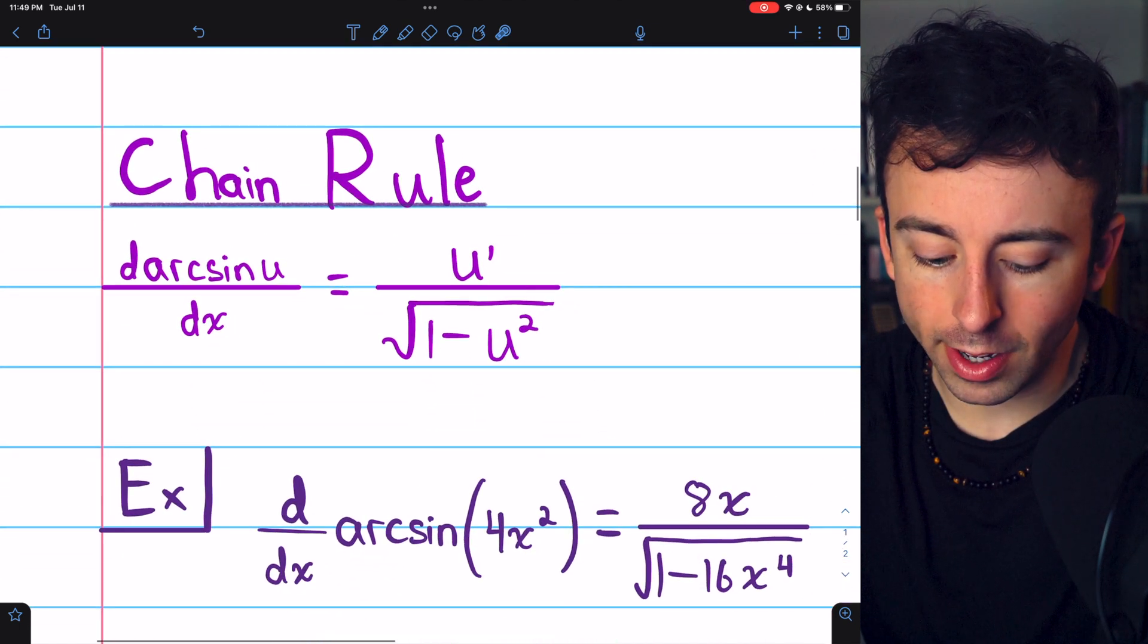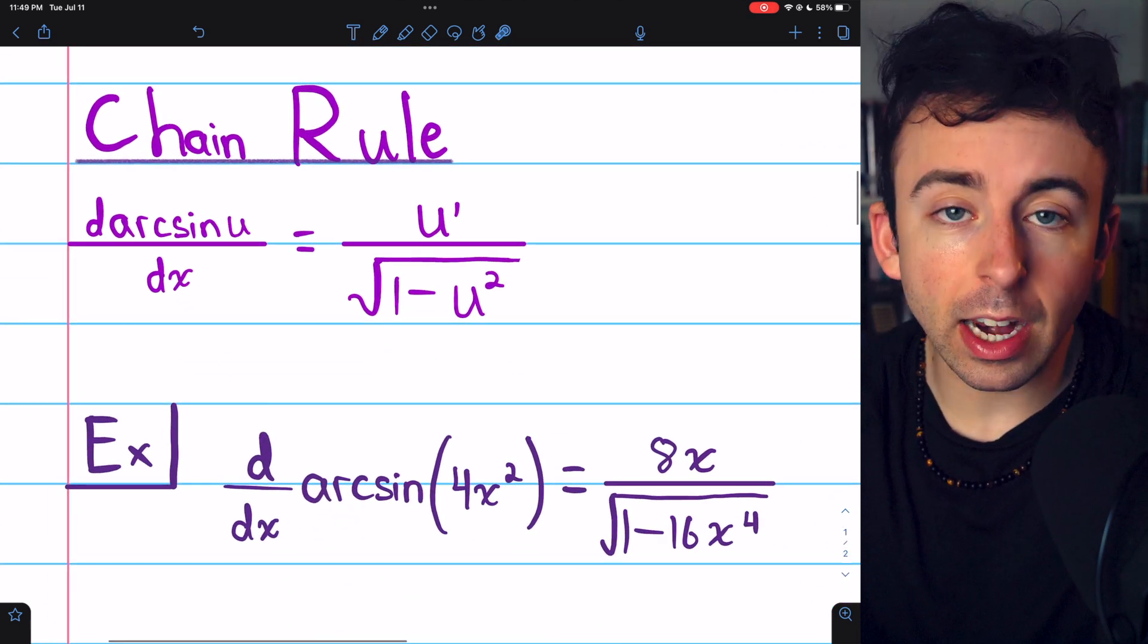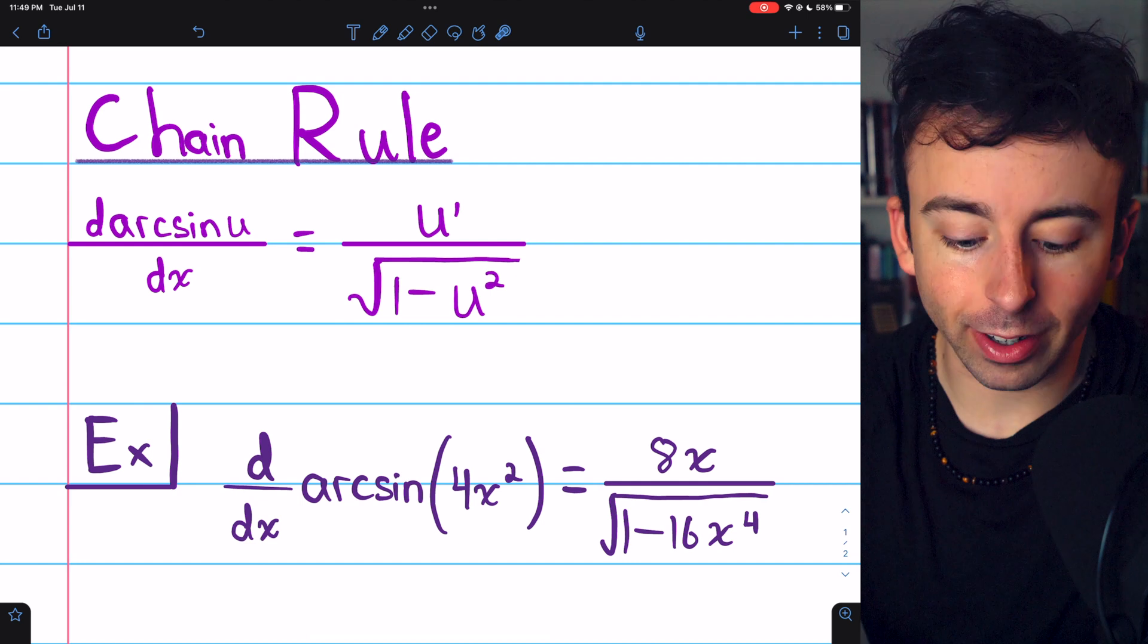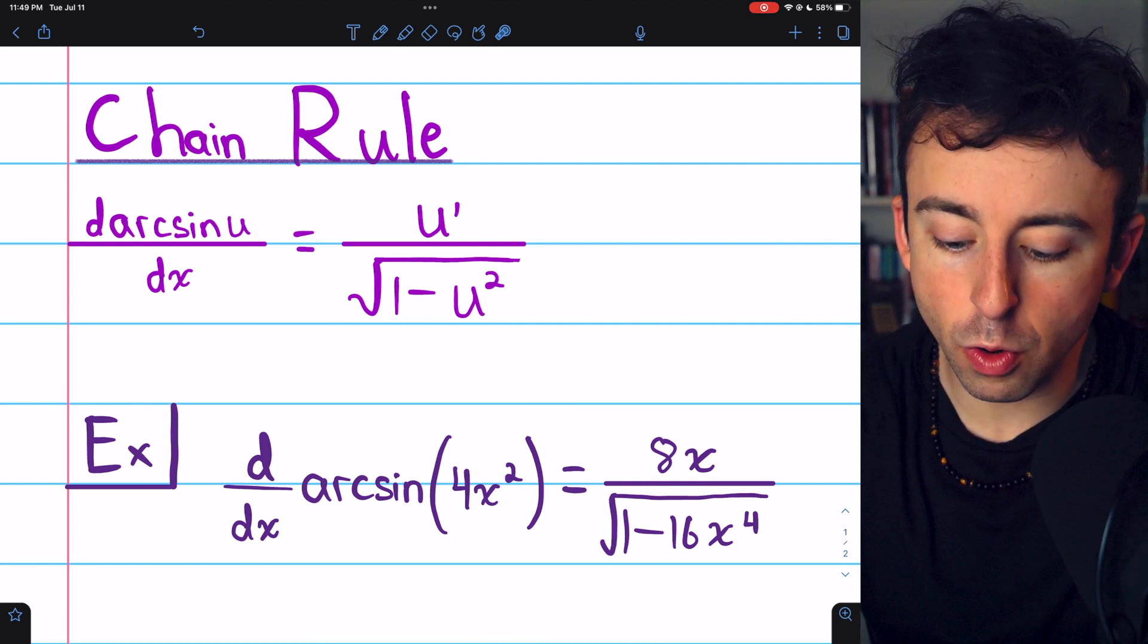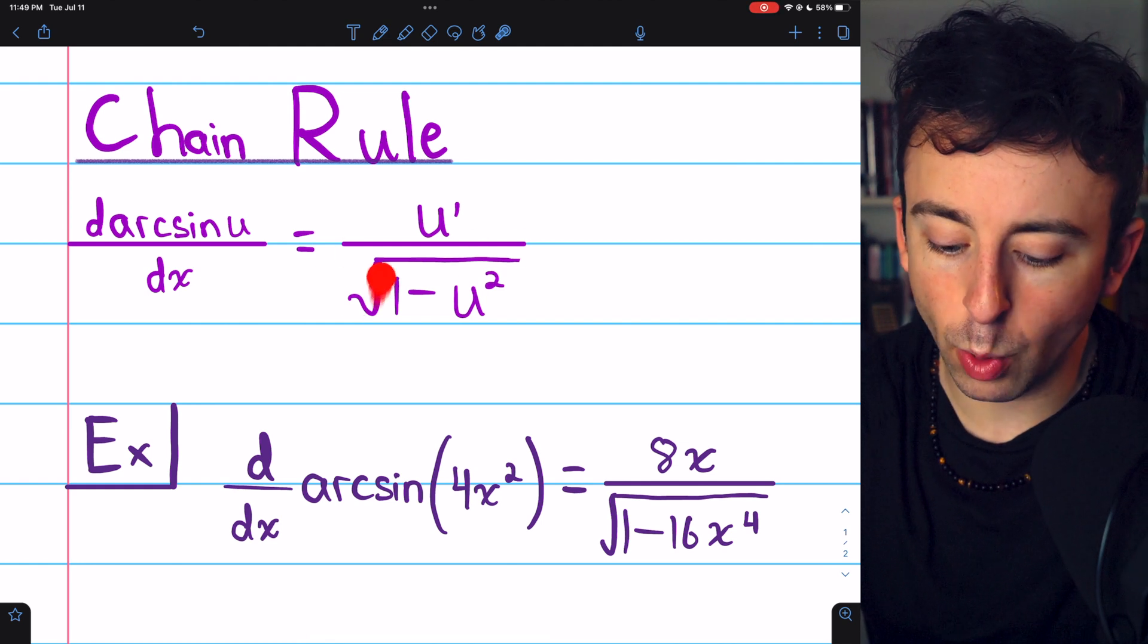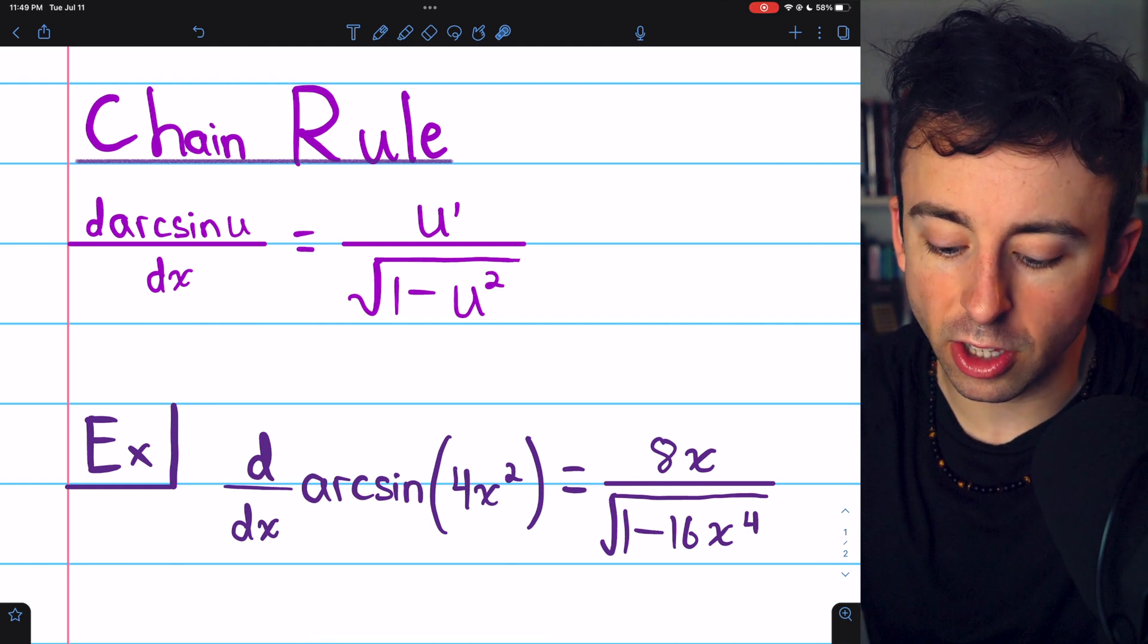And here's what it would look like in the context of the chain rule. If instead of arcsin(x), we had arcsin(u), where u is a function of x, then the derivative would be u' divided by the square root of 1 - u².